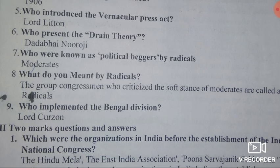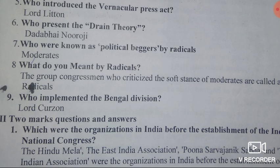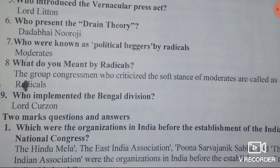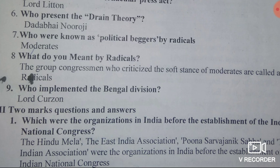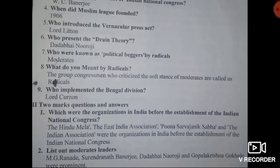Question six: who presented the Drain Theory? Answer: Dadabhai Naoroji presented the Drain Theory. Dadabhai Naoroji explained about the transfer of Indian wealth to England, which is called the Drain Theory. Question seven: who were known as political beggars by radicals? Answer: moderates. Question eight: what do you mean by radicals? Answer: the group of congressmen who criticized the soft stance of moderates is called radicals. Question nine: who implemented the Bengal Division? Answer: Lord Curzon implemented the Bengal Division.